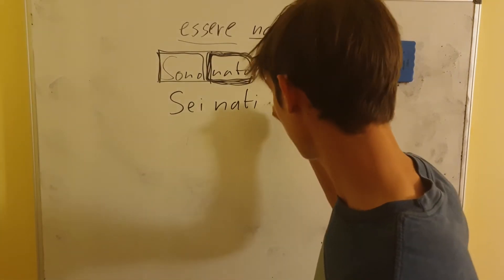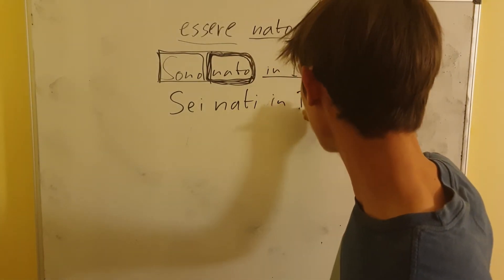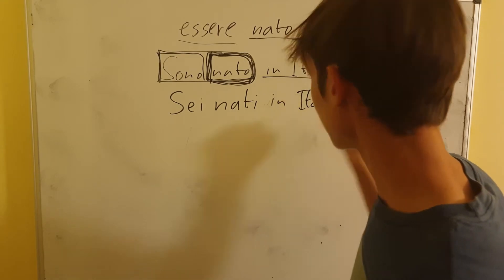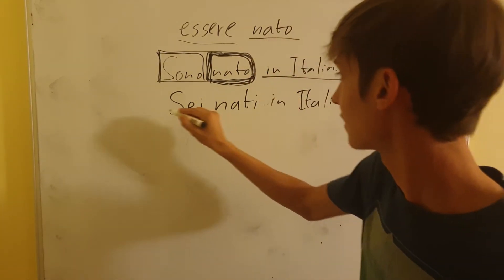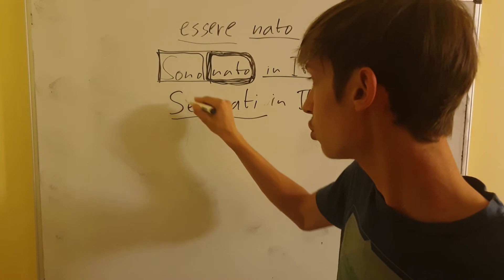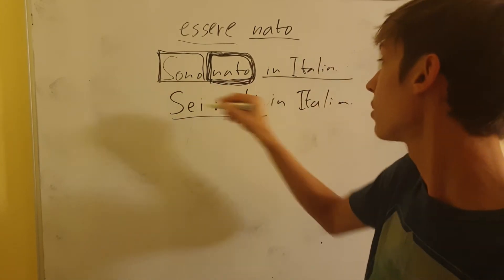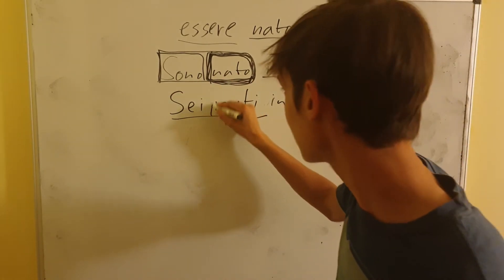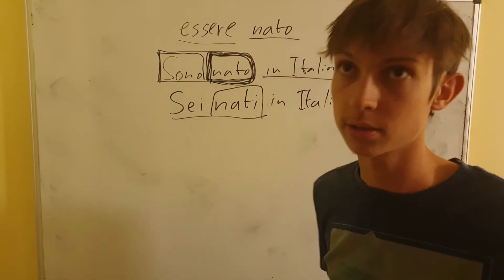Sei nati in Italia. Again, the same thing like here, but it's sei nati, where sei is you are born, so you were born in Italy. Nati is for second person because it's you.